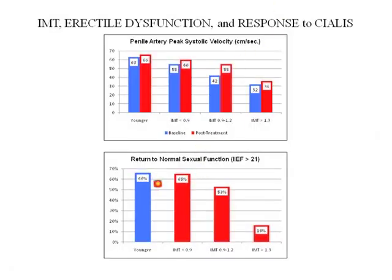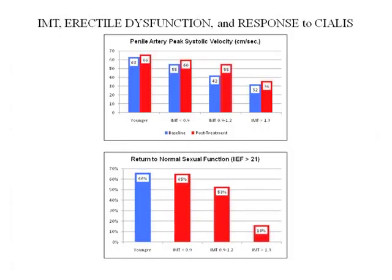In the men with increased intermediate thickness, Cialis therapy was not as effective. Looking at actual sexual function: two-thirds of the younger men returned to normal sexual function. Two-thirds of the men with organic ED who did not have abnormal intermediate thickening got better — normal sexual activity was resumed. In men with mild to moderate increase in IMT, half returned to normal sexual function. In men with an increased IMT, only 16% improved.